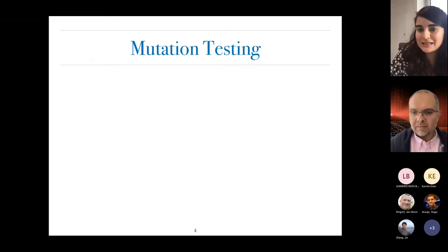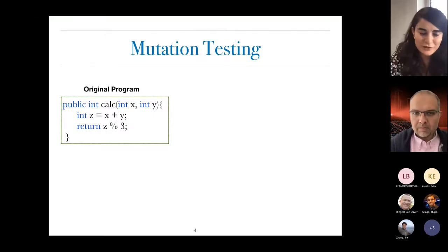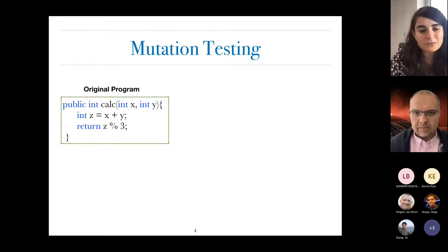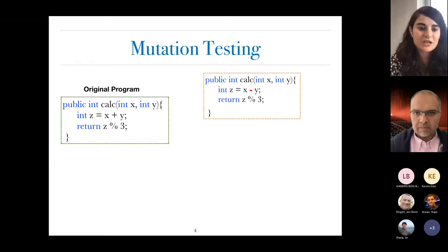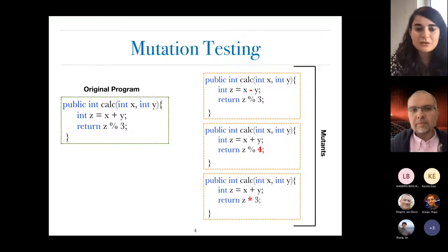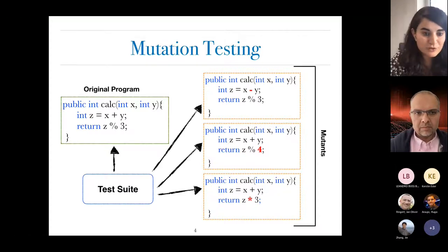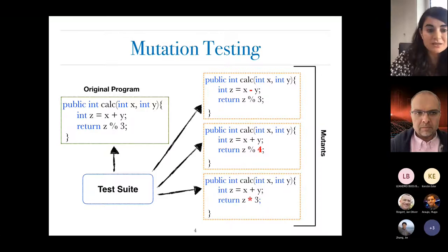In traditional software testing, mutation testing is an approach where we have an original program which does some sort of calculation, and then we take it and apply small syntactic changes to it. We can change plus to minus, three to four, or division to multiplication, and we obtain a set of programs with injected faults called mutants. We then take our test suite, execute it over the original program and over each of the mutants, and see if at least one test case passes for the original but fails for a given mutant.